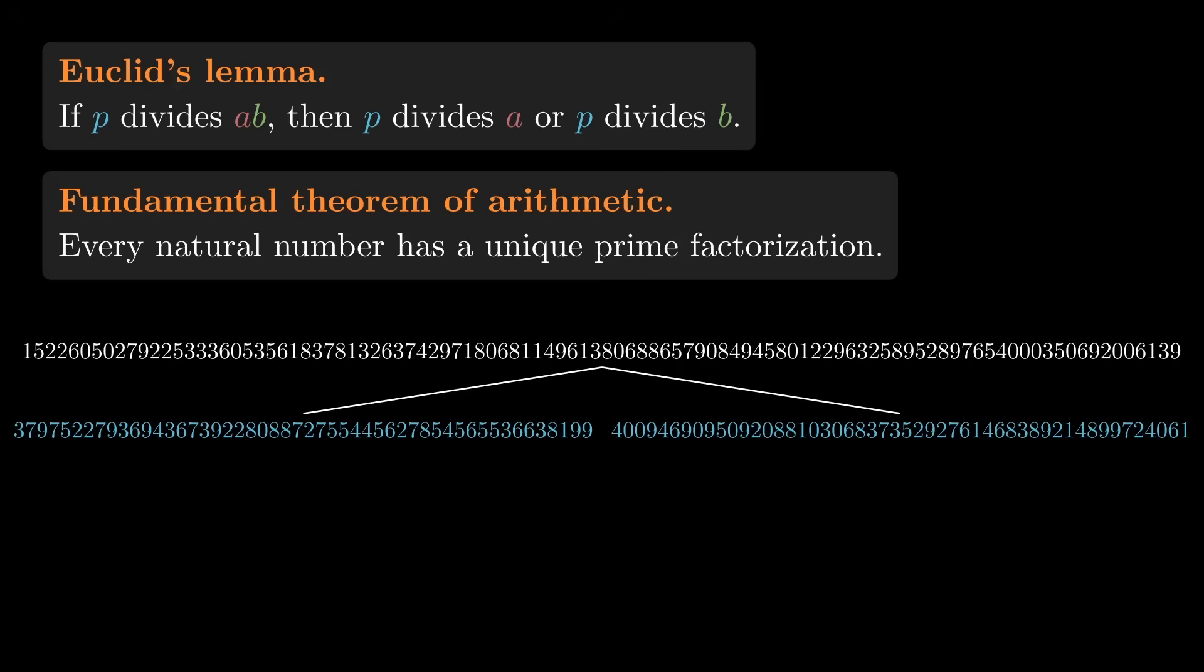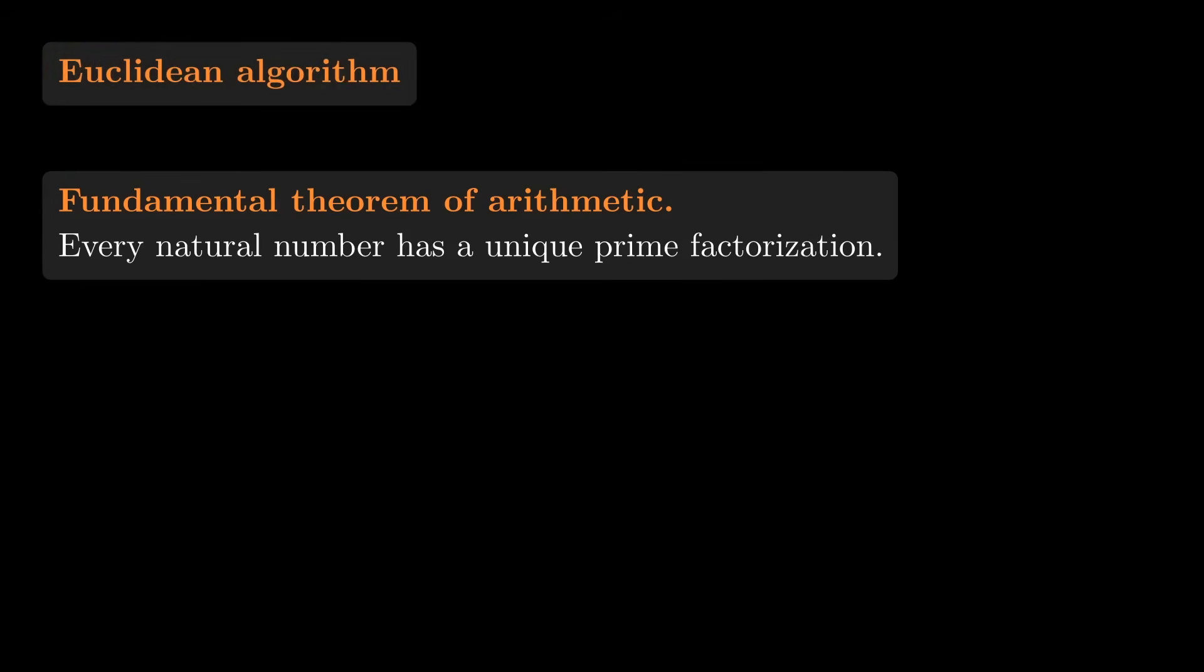even though there's no record to check them against. The Euclidean algorithm is such a simple process, but it gives us a huge amount of leverage.